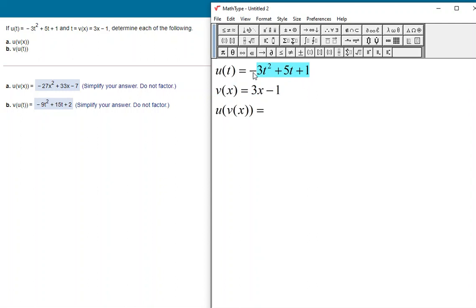So we're going to start with the u function, because that is the outer function, and we're going to put v of x in place of our variable. So we're going to plug our v of x equation into the u of x equation.